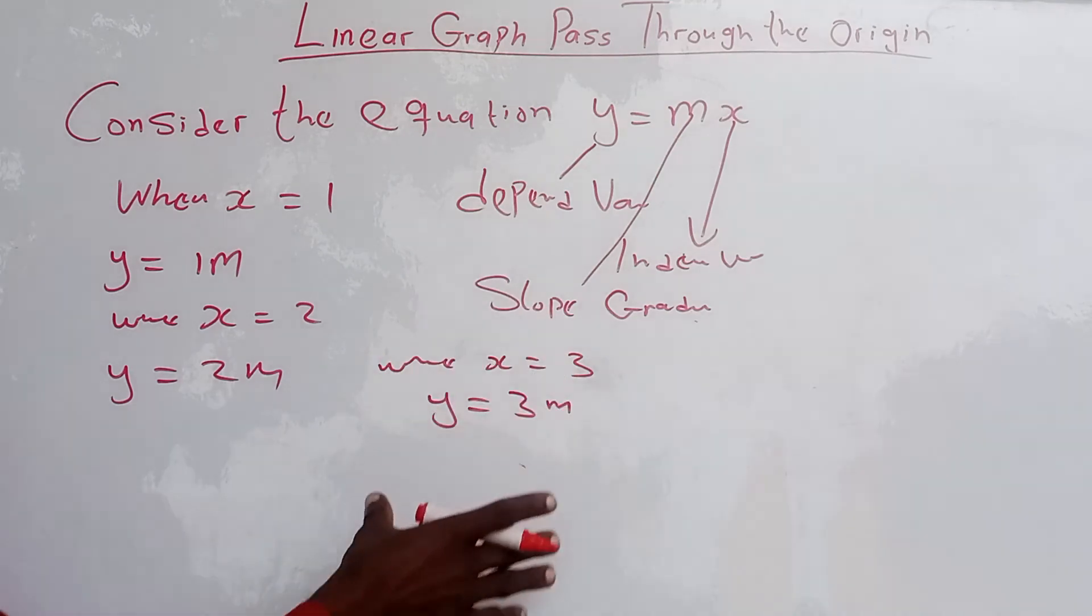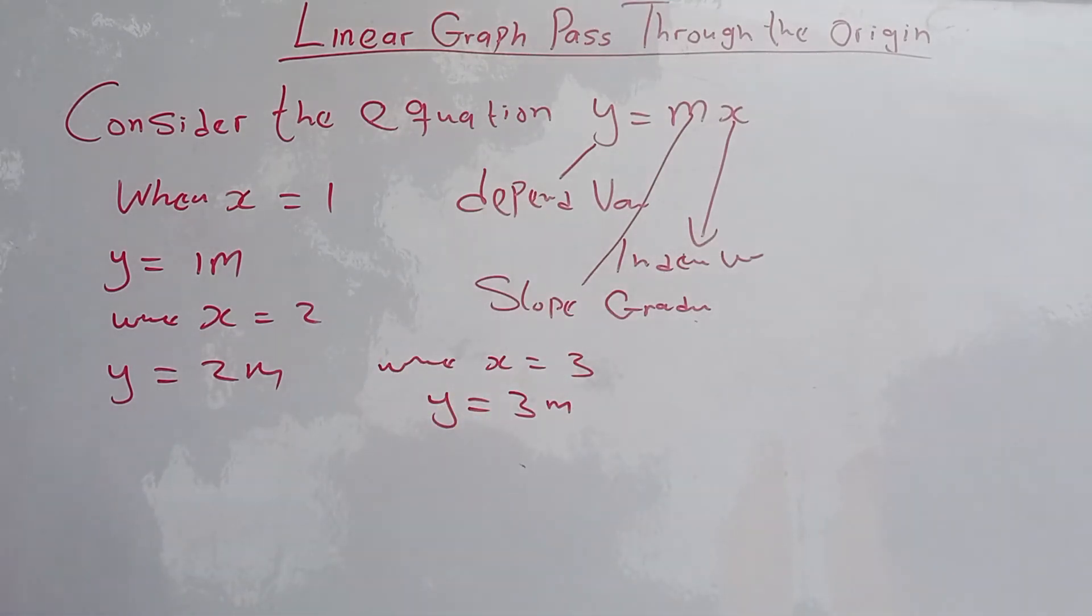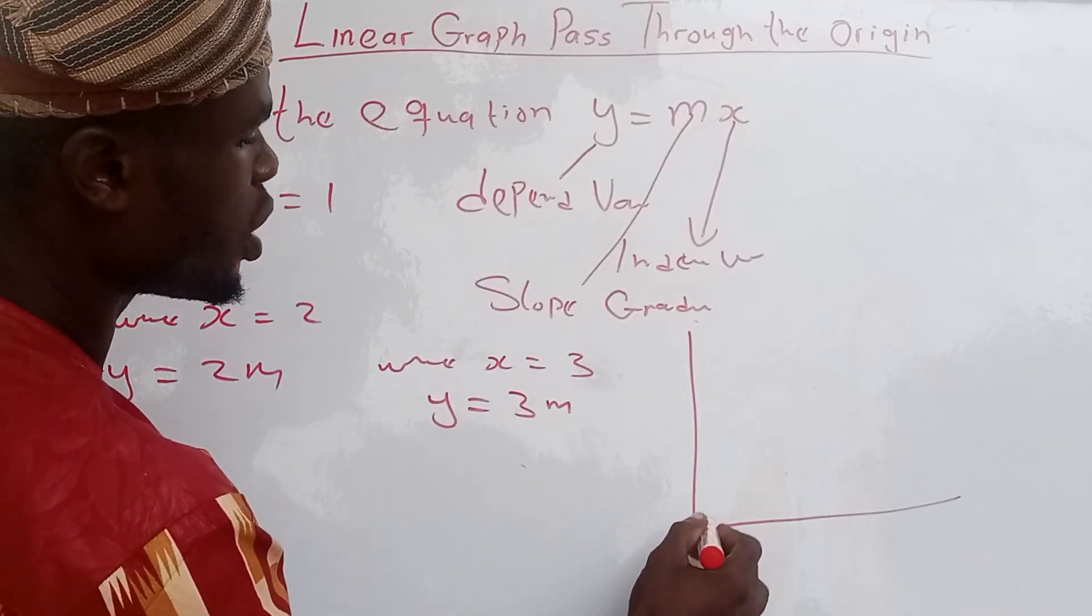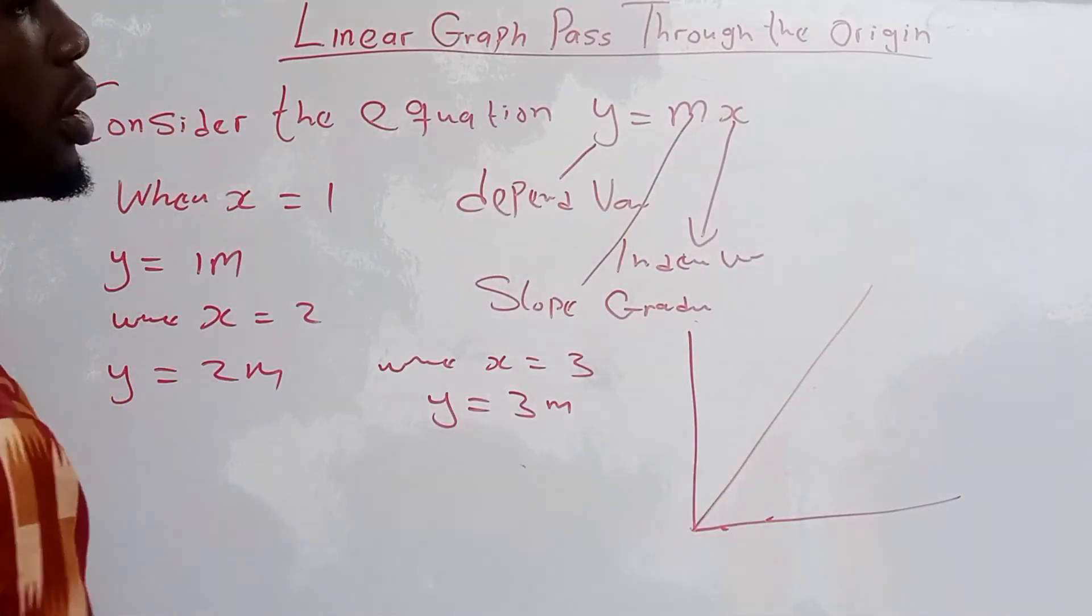This type of graph always passes through the origin.